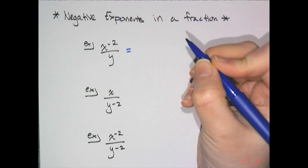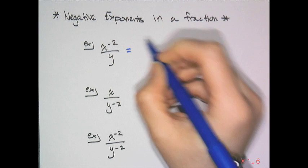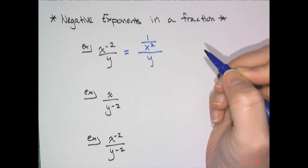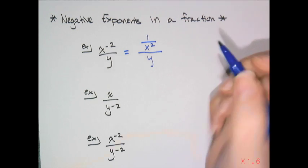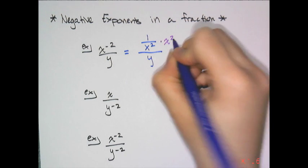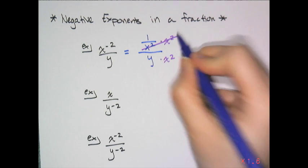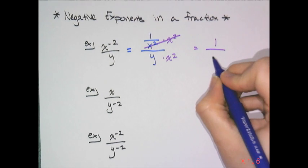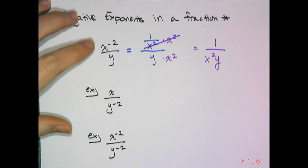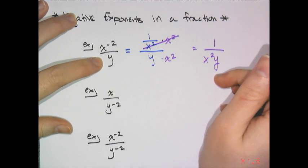By definition, if I take x to the negative 2 and get rid of the negative exponent — remember that means reciprocal — I have 1 over x squared, all over y. I don't like having a fraction in a fraction, so I multiply the numerator and denominator by x squared. I get 1 over x squared y. So x to the negative 2 over y simplifies to 1 over x squared y.